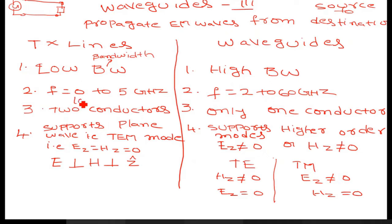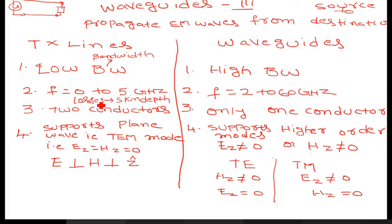As frequency increases, the losses also increase due to skin depth. Skin depth is essentially the radiation resistance that depends on the frequency of operation. So as frequency increases, the losses are going to increase, and whatever energy you are sending will not reach the destination — there are huge losses.